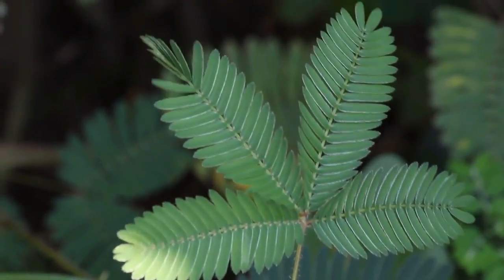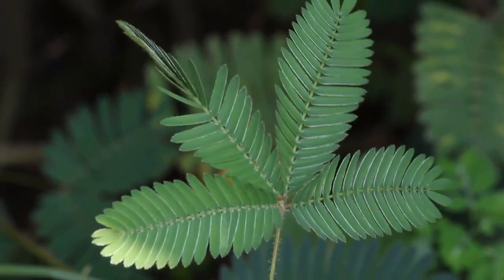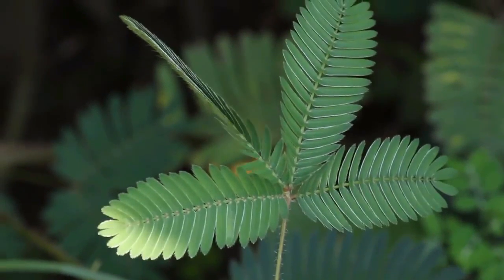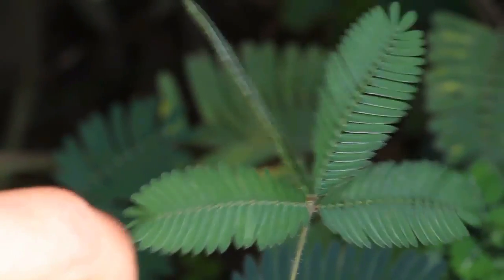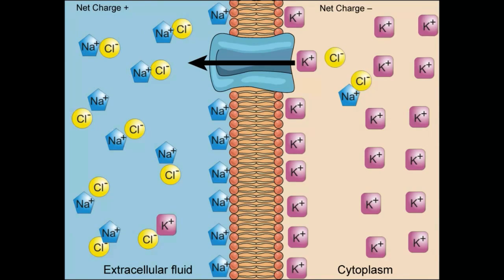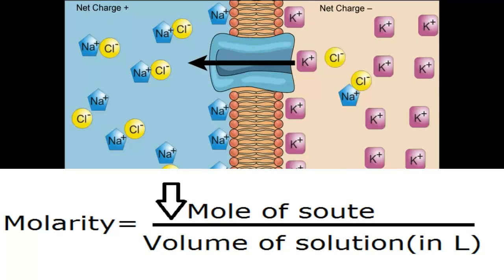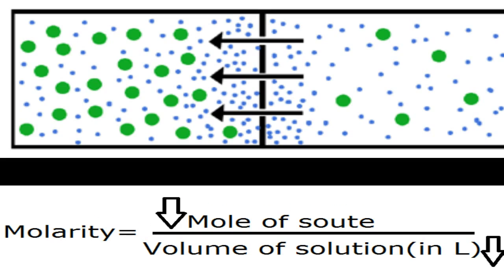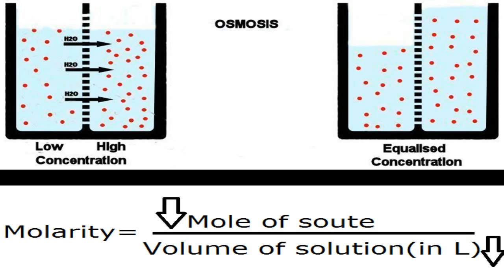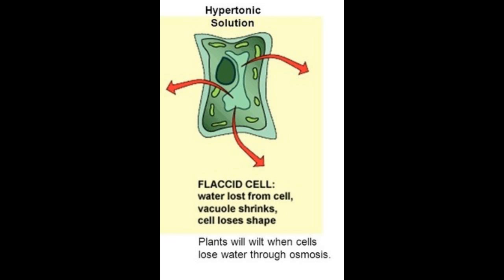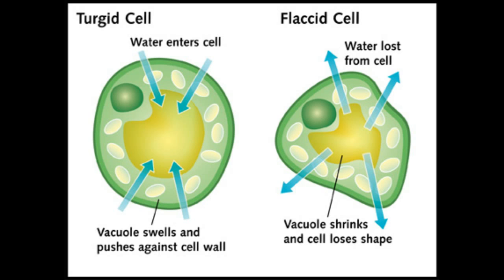Now, when you touch or disturb a touch-me-not plant, this stimulus is transmitted as an action potential. This action potential causes potassium ions to flow out of the cell. Due to this, the amount of solute in the cell decreases. So as already described, due to osmosis the concentration will maintain itself — therefore the solvent, which is water in this case, must flow out of the cell to keep the concentration constant.